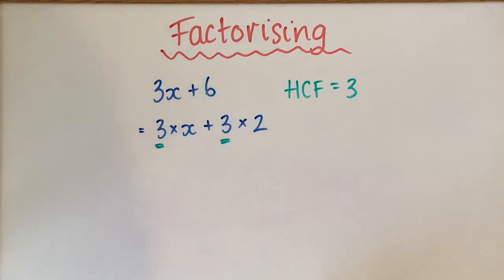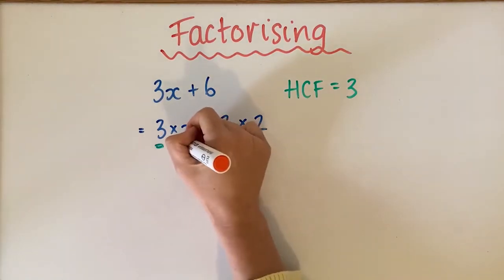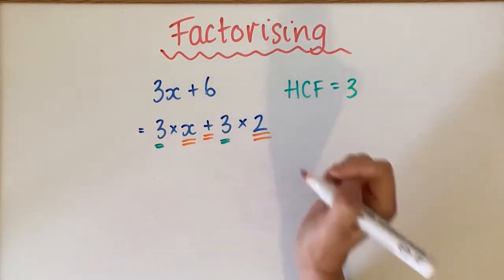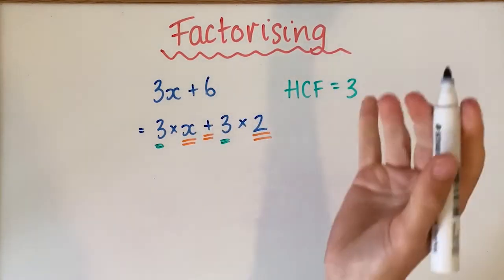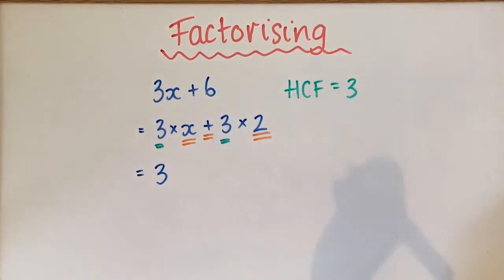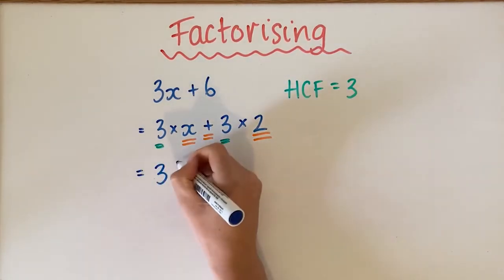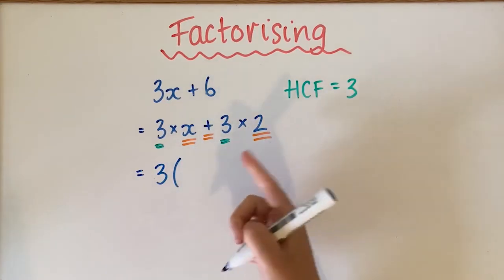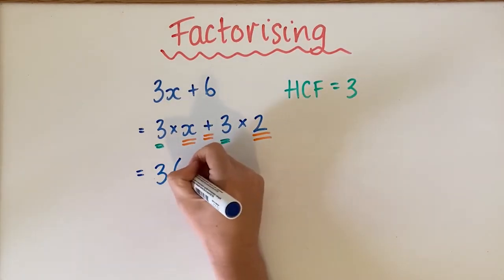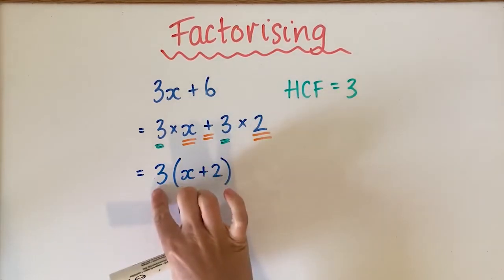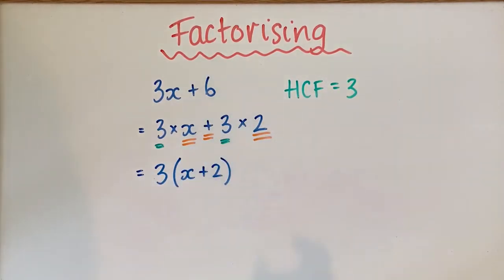You can see I've colored the 3s both green because they're the common factor. Everything else that isn't a multiplication sign gets a different color. The 3 comes out the front because it's the common factor, and then everything that's left — colored in orange — goes inside the bracket. So green came out the front and orange went inside.